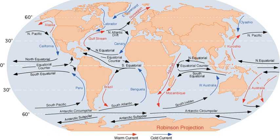The thermohaline circulation is a part of the large-scale ocean circulation that is driven by global density gradients created by surface heat and freshwater fluxes. The adjective thermohaline derives from thermo referring to temperature and haline referring to salt content, factors which together determine the density of seawater. Wind-driven surface currents travel polewards from the equatorial Atlantic Ocean, cooling en route, and eventually sinking at high latitudes forming North Atlantic deep water. This dense water then flows into the ocean basins. While the bulk of it upwells in the Southern Ocean, the oldest waters with a transit time of around 1,000 years upwell in the North Pacific. Extensive mixing therefore takes place between the ocean basins, reducing differences between them and making the Earth's oceans a global system.